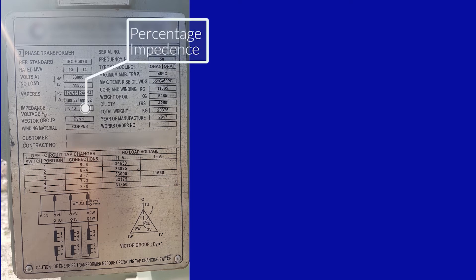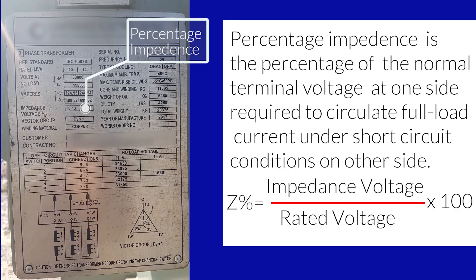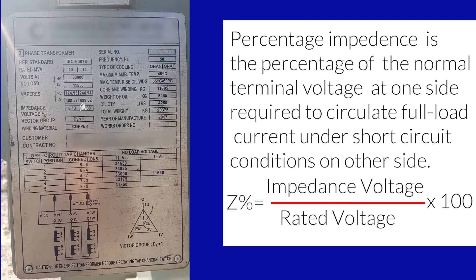Next, we can see the percentage impedance of transformer is showing here. The percentage impedance is the percentage of the normal terminal voltage at one side required to circulate full load current under short circuit condition on other side. The formula is given below.